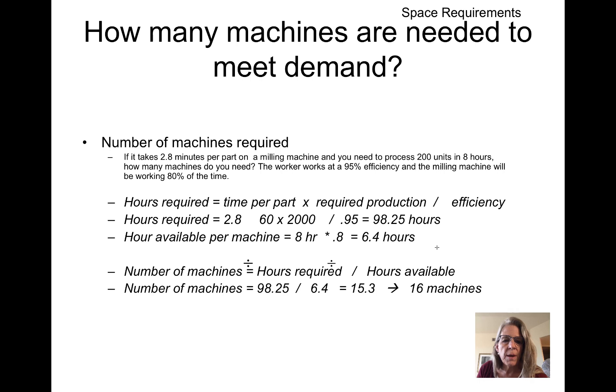In this example, we're going to take the 2.8 minutes and divide by 60 because we want to convert this into hours. Then we have 2,000 parts that are required to be processed at 95% efficiency. So we need 98.25 hours.